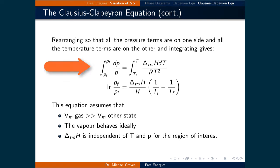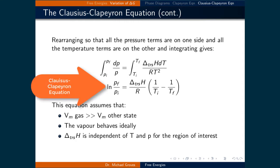Rearranging so that all the pressure terms are on one side and all the temperature terms are on the other, and integrating gives the integral from an initial pressure to a final pressure of dp over p, equal to the integral from an initial temperature to a final temperature of the change in enthalpy of the transition times dT over the gas constant times the temperature squared. Evaluating these integrals gives the natural logarithm of the final pressure over the initial pressure equal to the change in enthalpy of the transition divided by the gas constant times the inverse of the initial temperature minus the inverse of the final temperature. This is the Clausius-Clapeyron equation.